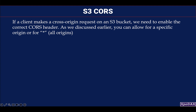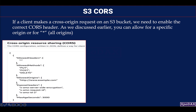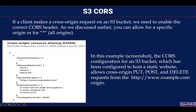Now let's look at CORS in the context of websites running on S3. If a client makes a cross-origin request on an S3 bucket, we need to enable the correct CORS headers. As discussed, you can allow a specific origin or use asterisk for all origins. For example, a CORS configuration for an S3 bucket hosting a static website can be set to allow cross-origin PUT, POST, and DELETE requests from the hgtv.example.com origin.